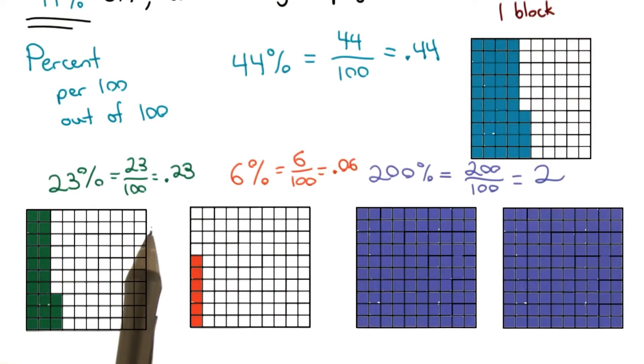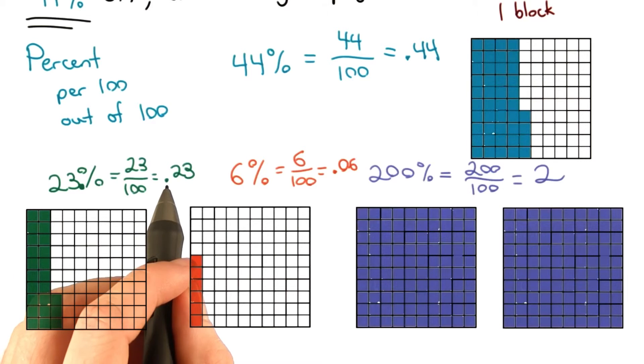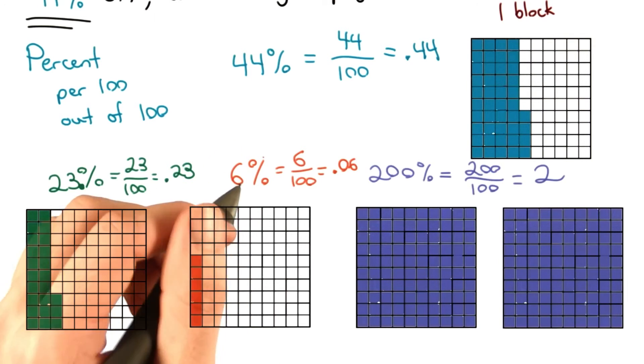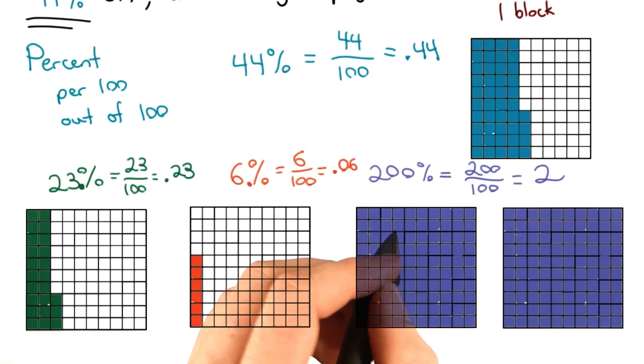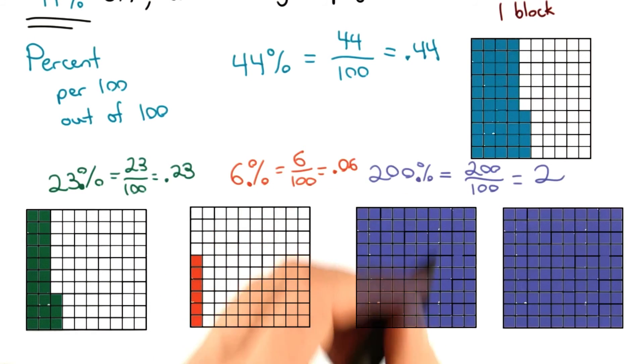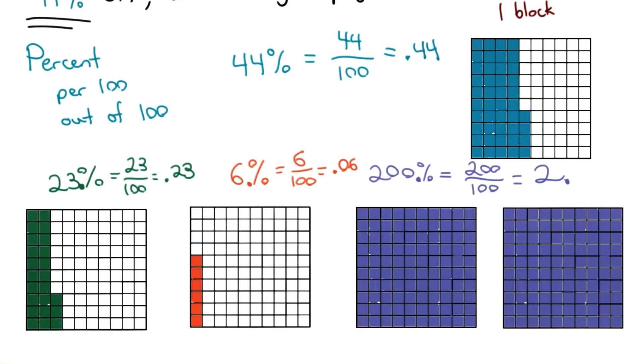Okay, there's actually a pattern here that we want to notice. Let's look closely at the decimal places. Here in 23%, the decimal is here, and then it ended up here. For 6%, the decimal started here, and ended up here. For two hundred percent, the decimal started here, and ended up there. Let's have a quiz behind what's going on with this pattern. What do you notice?